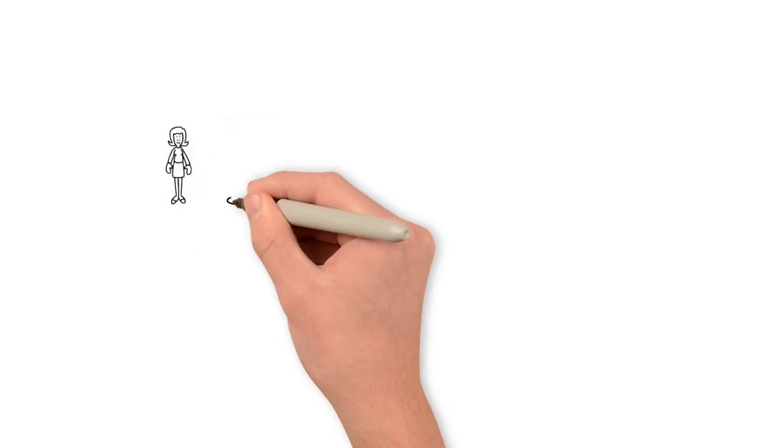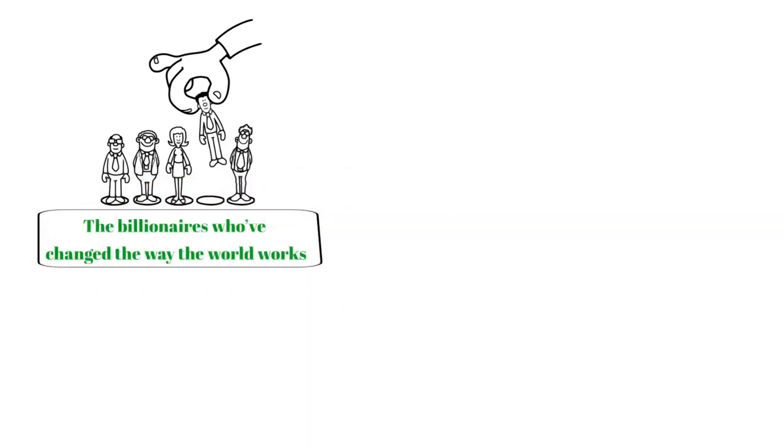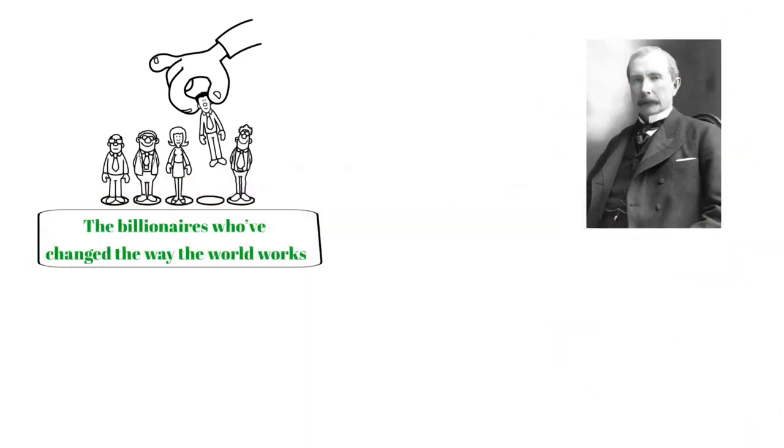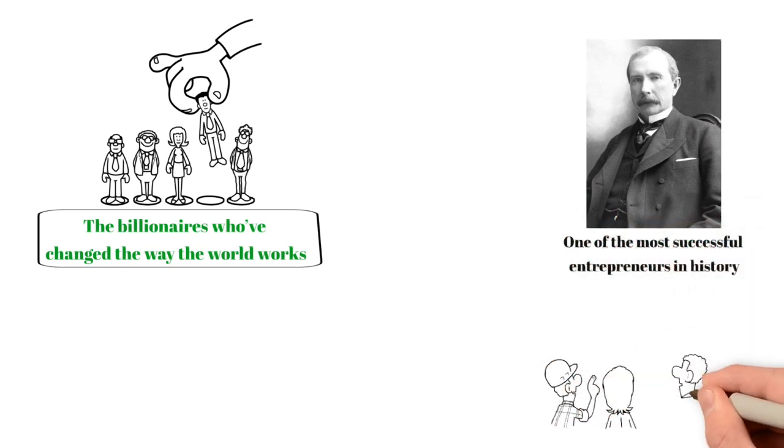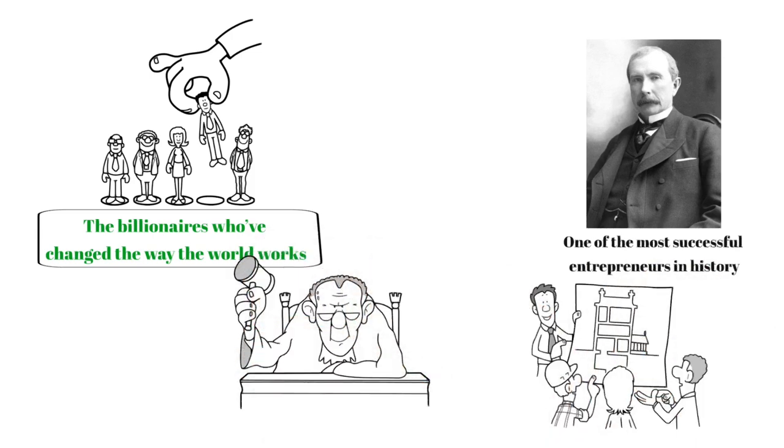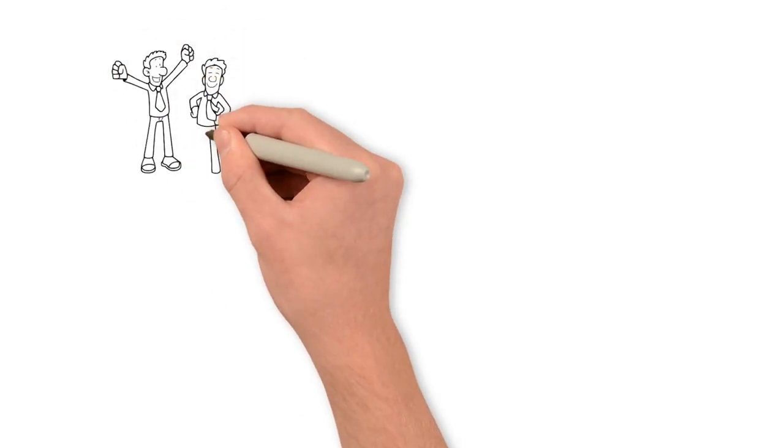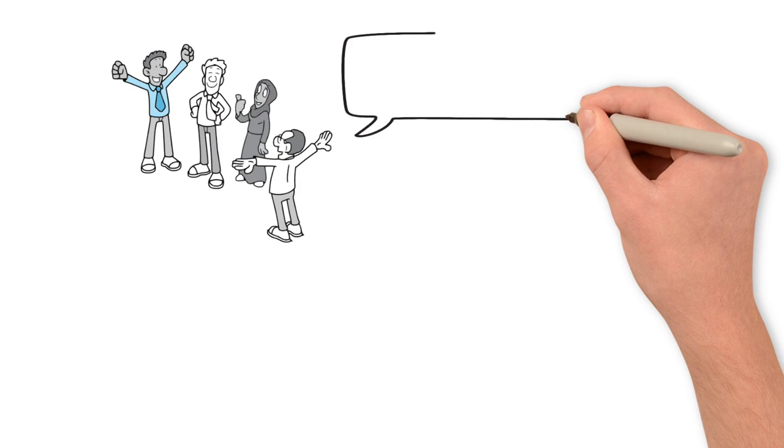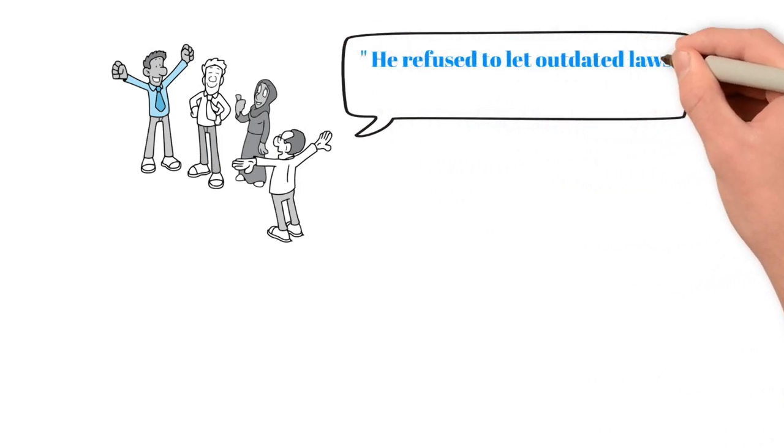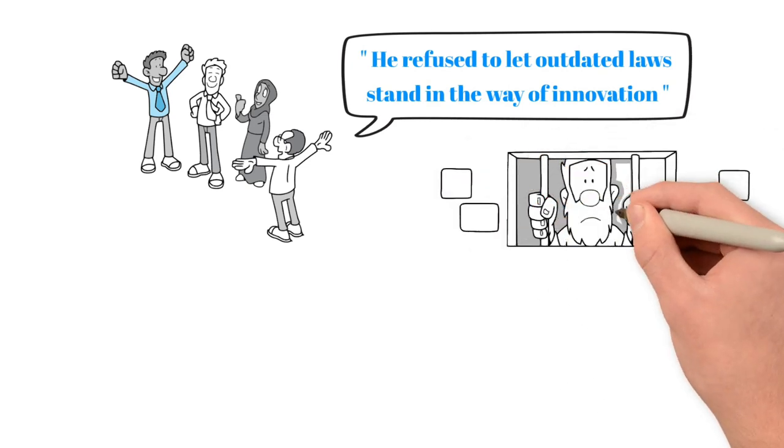When we study highly successful people, we usually end up picking outliers, the billionaires who've changed the way the world works. And that can lead us astray. Take John D. Rockefeller, one of the most successful entrepreneurs in history. When he started building his petroleum industry, he faced a problem. The laws of the United States didn't permit him to do what he wanted to do. His solution was simple: Ignore them. His disregard for legal conventions was so great, in fact, that one judge said his business behaved no better than a common thief. Rockefeller's success shapes the way we think about this behavior. Looking back, it's easy to celebrate his vision and say that he refused to let outdated laws stand in the way of innovation.